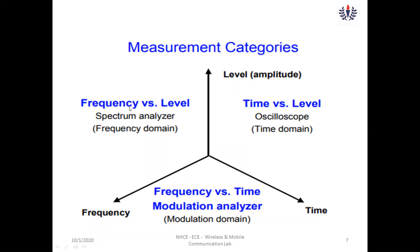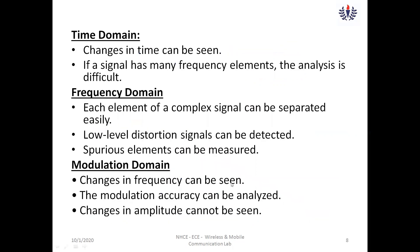Frequency versus level is done using a spectrum analyzer, normally taken in the frequency domain, and the level corresponds to amplitude. Time versus level is done using an oscilloscope in the time domain. Frequency versus time is handled by a modulation analyzer and uses the modulation domain. So we have three domains: frequency domain, time domain, and modulation domain.